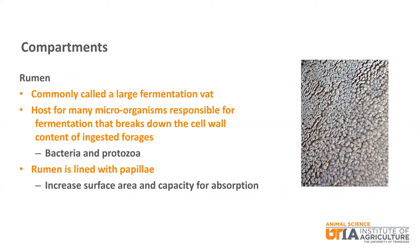The first compartment is probably the most popular compartment — the rumen. It is commonly referred to as a large fermentation vat. It serves as the host for microorganisms, primarily bacteria and protozoa, which are responsible for the fermentation that breaks down cell wall content of ingested forages. The rumen wall is lined with papillae, which serve to increase the surface area of the tissue and allow for increased capacity for nutrient absorption.